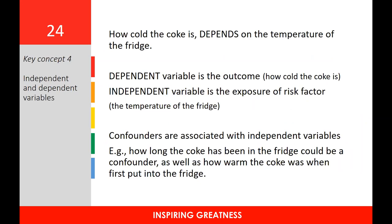Key concept four: the difference between an independent and a dependent variable. The easiest way to explain this is with the sentence: how cold the Coke is depends on the temperature of the fridge. The dependent variable — the coldness of the Coke — is the outcome. The independent variable — the temperature of the fridge — is the exposure or risk factor. Confounders are associated with independent variables; in the Coke example, confounders might be how long the Coke has been in the fridge or how warm it was before it was put in.